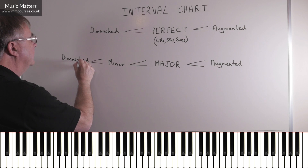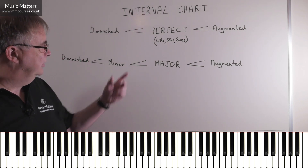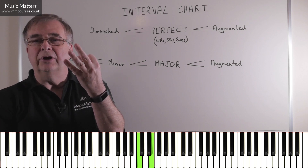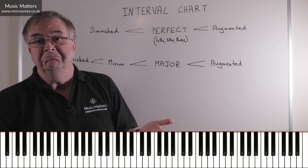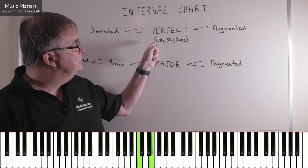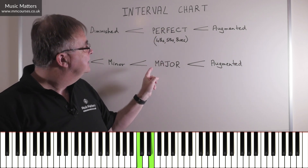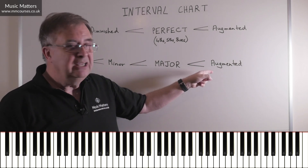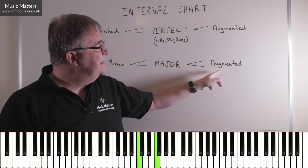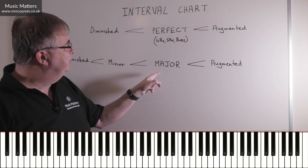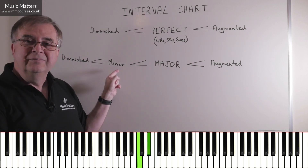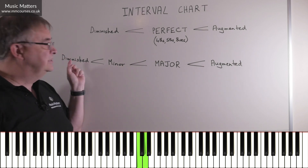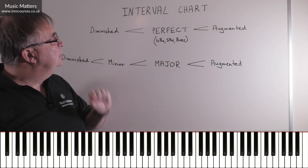So that's how the table works. If you have a third — C to E — C, D, E is a third. E is the third note of C major, so this is a major third. It's not a fourth, fifth, or octave, so it's not perfect — it must be major. Seconds, thirds, sixths, and sevenths will be major. C to E is a major third because E is the third note of C major. But if you make it C to E-sharp, it becomes an augmented third because it's got a semitone bigger. If instead it was C to E-flat, it's a semitone smaller, so it's minor. And if it gets another semitone smaller — C to E-double-flat — then it's a diminished third.